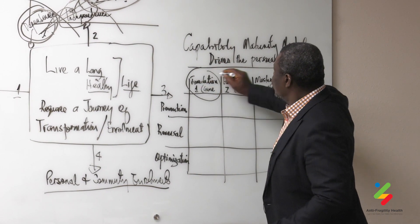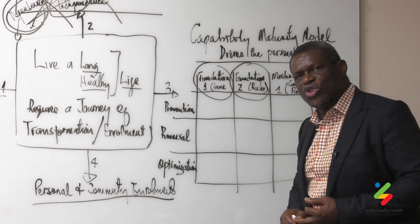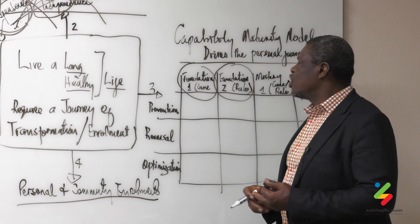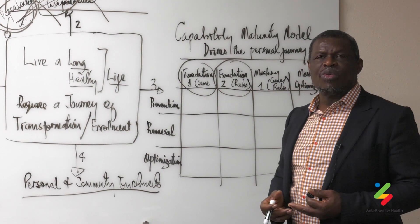And how have we structured that? First of all, we have two foundation levels of maturity, foundation one and foundation two. In foundation one, we need to understand the game. In foundation two, we need to understand the rules.